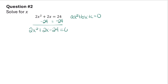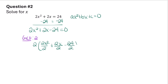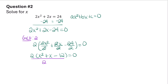Notice that this quadratic can actually be factored — it has a GCF of 2. So I can go ahead and divide every single term in this equation by 2, factoring out 2 from every term. Remember this equation is set equal to 0, so 2 over 2 cancels, and I have x squared plus x minus 12 equals 0.